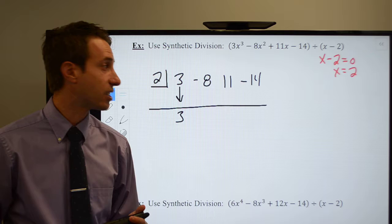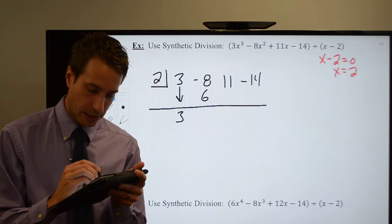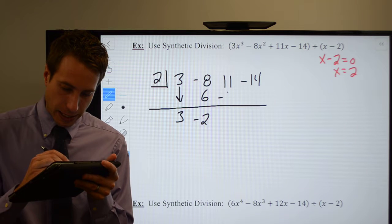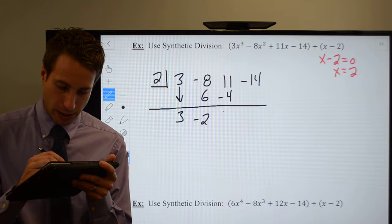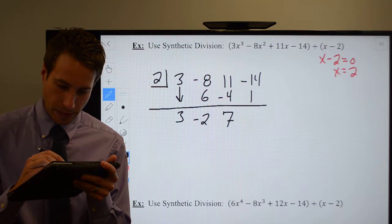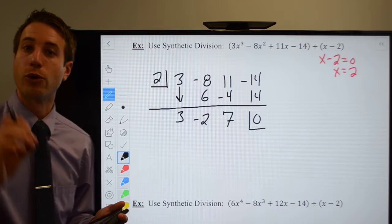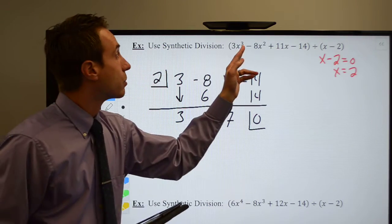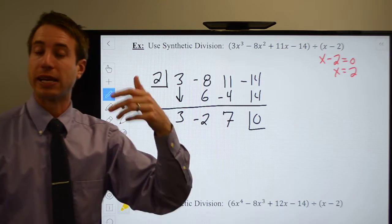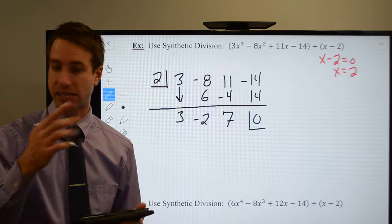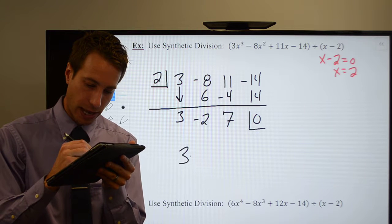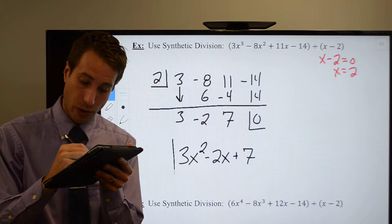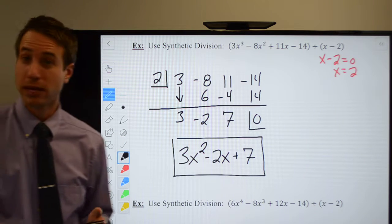Now it's multiply and add until I run out of numbers. 2 times 3 is 6, which leaves me with a negative 2. It's going to be a minus 4, which should give me a positive 7. That's going to give me a positive 14, which leaves me with a 0. I get a remainder of 0, which means that they're evenly divisible. That's nice. The original polynomial was a third degree, so my answer is going to be a second degree: 3x squared minus 2x plus 7. I don't have a remainder, and so we're all set.